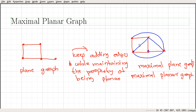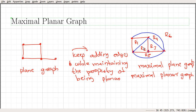If you look at this particular maximal planar graph, we can see that each region is a triangle — each region is surrounded by a triangle. Region R1 is surrounded by a triangle, R2 is also surrounded by a triangle, R3 is surrounded by a triangle, R4 is also surrounded by a triangle, R5 is also surrounded by a triangle. And the exterior region R6 is also bounded by a triangle. Such a graph is also called a triangulation.